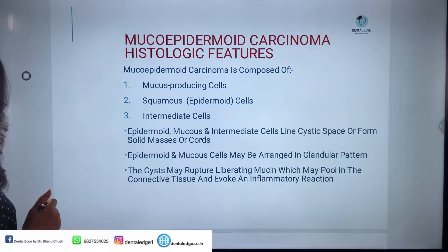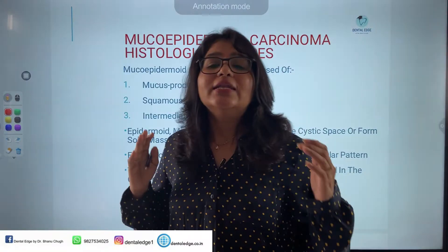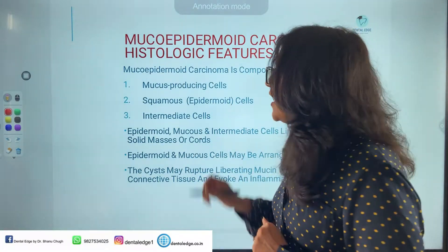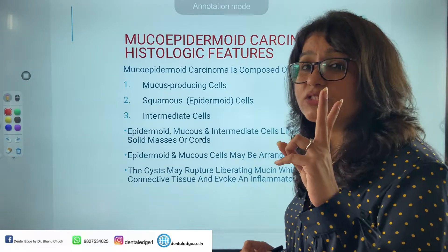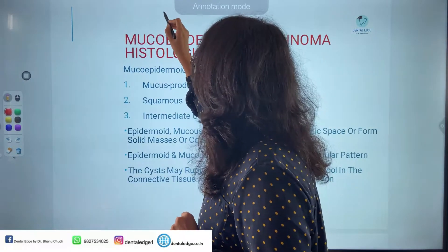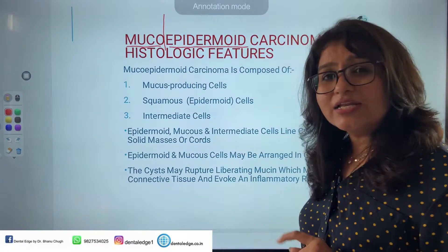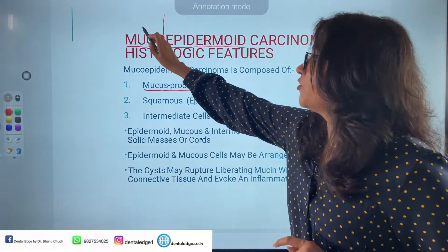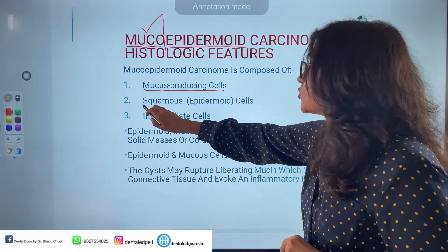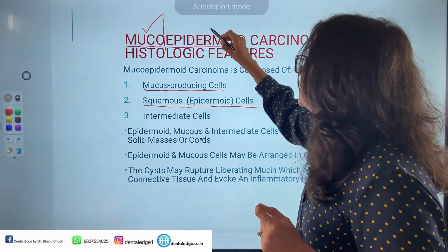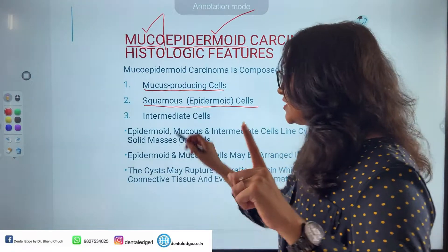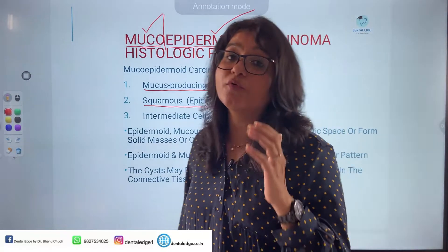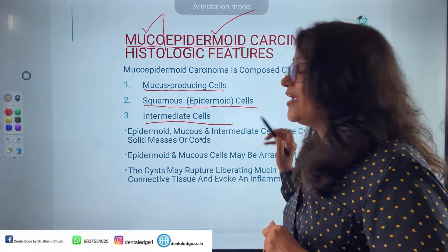Mucoepidermoid carcinoma is a malignancy of salivary tissue origin. From the name, we can understand there are two types of cells present. Dividing the word: 'muco' gives us mucus producing cells, and 'epidermoid' gives us squamous or flat cells. There is also a third, very important cell population for diagnosis: the intermediate cell. So we have three types of cells to draw.